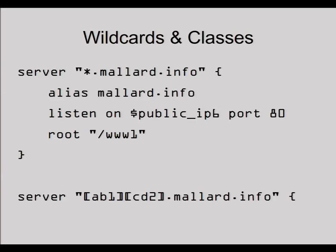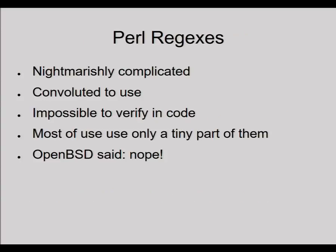You can use wildcards — any hostname in mallard.info — so this server answers as well as the mallard.info alias. The wildcard does not match the plain domain name because of the period. You can also do character classes just like in a shell. How many of you know and loathe Perl regexes? They decided that the code to do Perl regexes is, as I recall, larger than the code of HTTPD itself — and Rake hasn't given me the look that I'm an idiot, so I'll go with that.